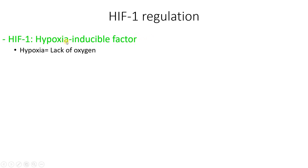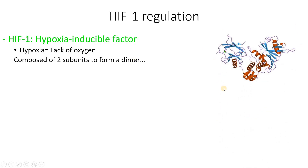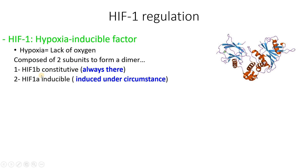So what does it actually break up into? Hypoxia means lack of oxygen, and 'inducible factor' starts to make sense when we understand that HIF-1 is composed of two subunits to form a dimer. It has a full structure with two subunits. The first subunit is constitutive — it's always there, it's not induced, not regulated, not controlled. But the other one, which we really care about, is the main induced subunit, and it's HIF-1 alpha. It is induced under circumstances, one of which is hypoxia.